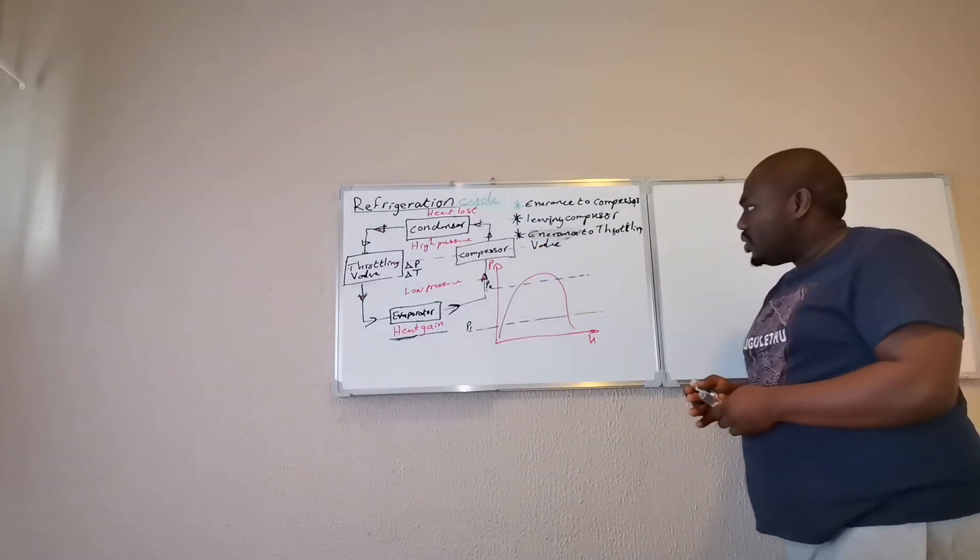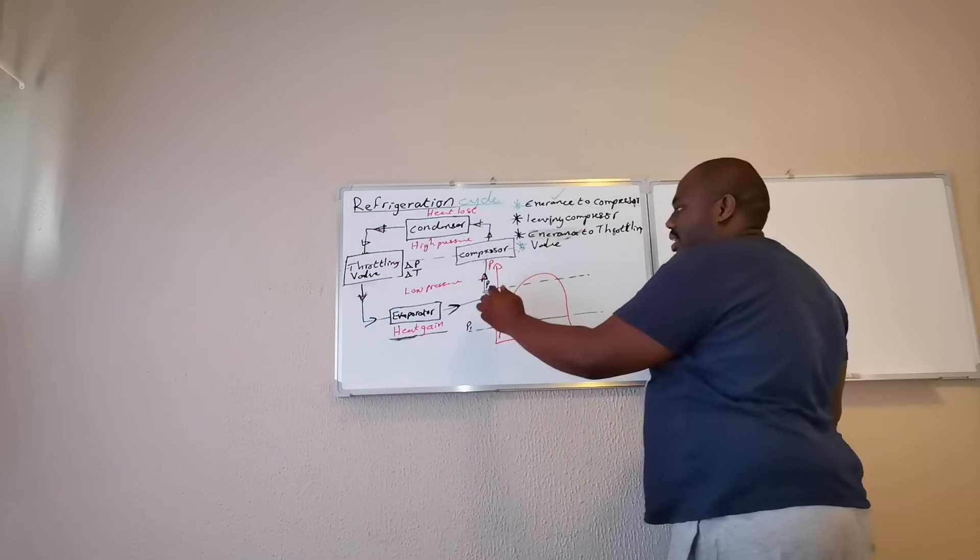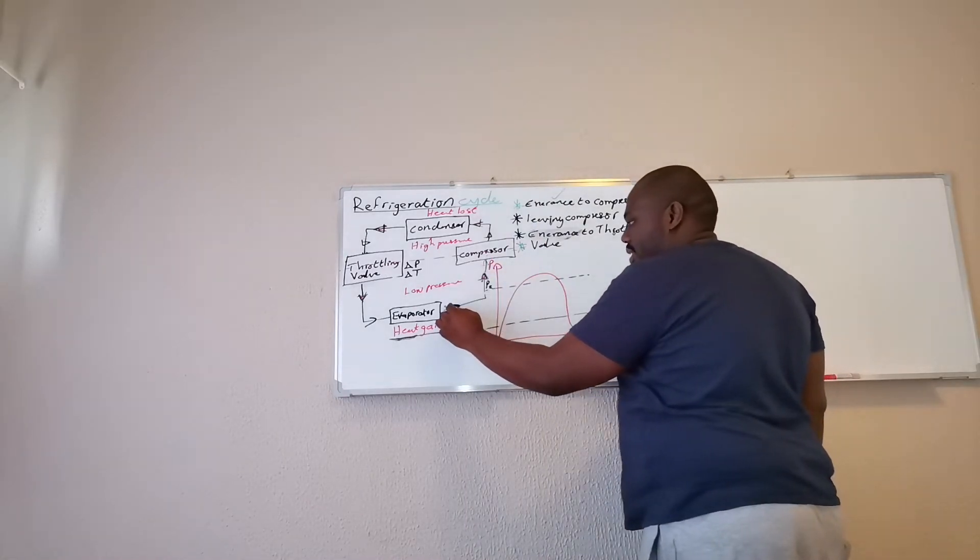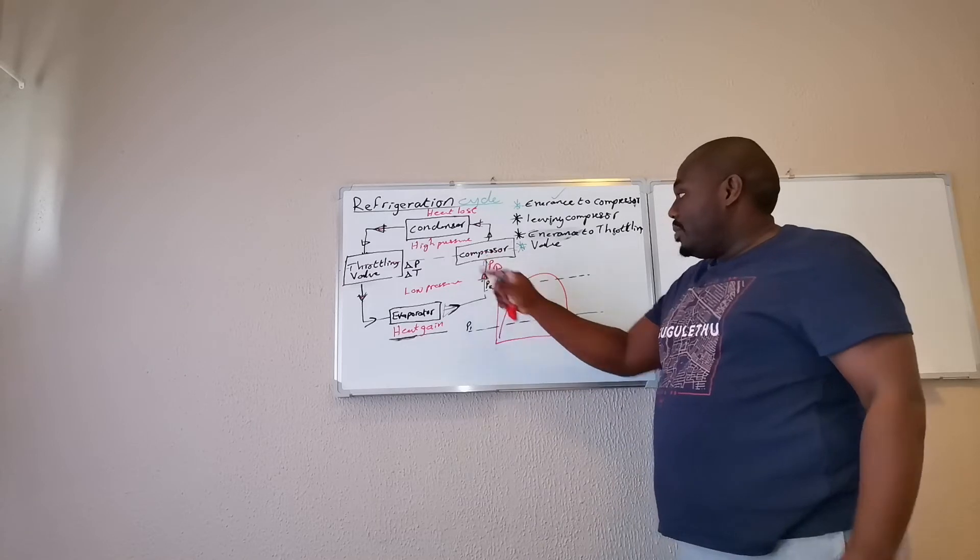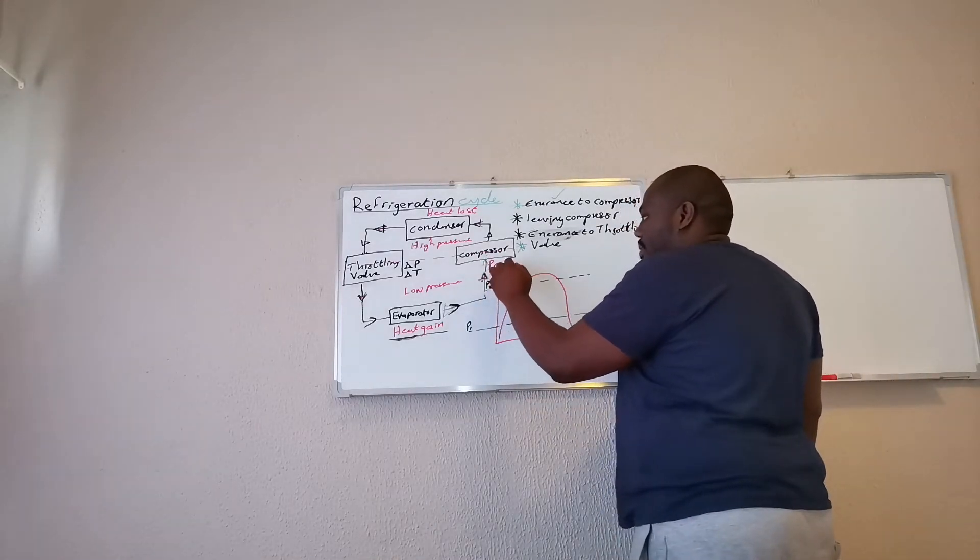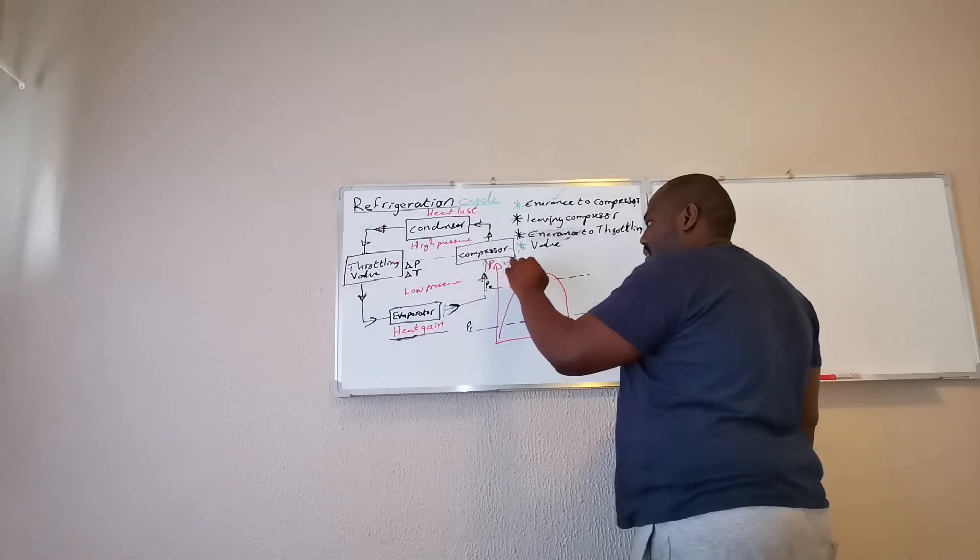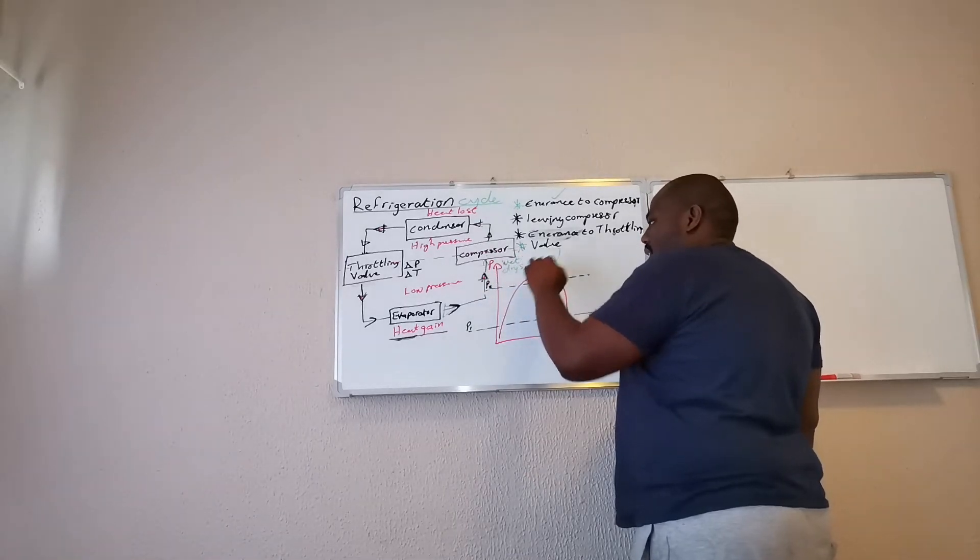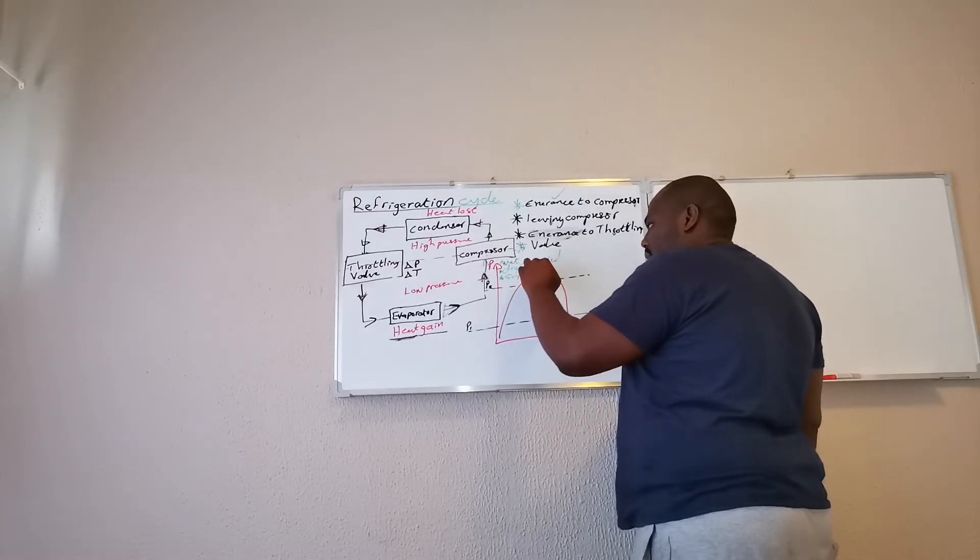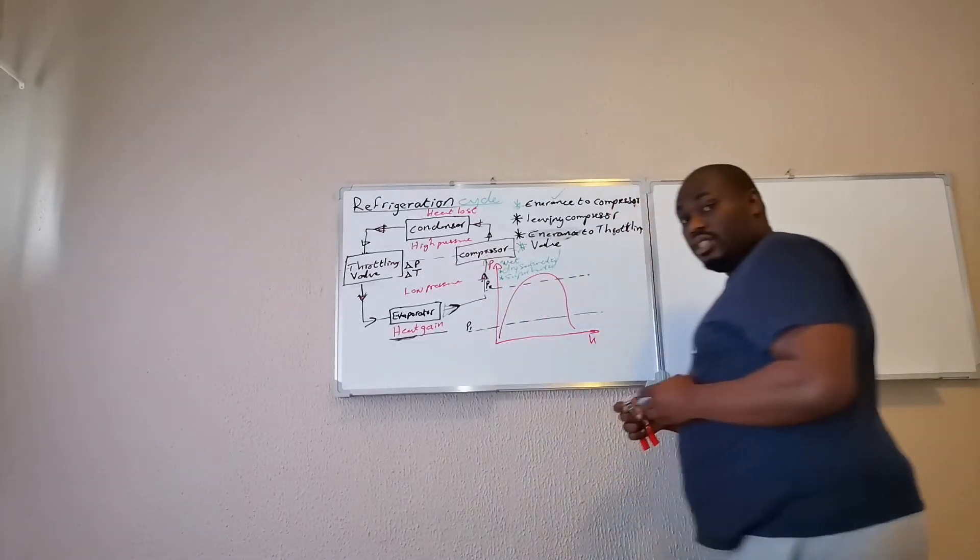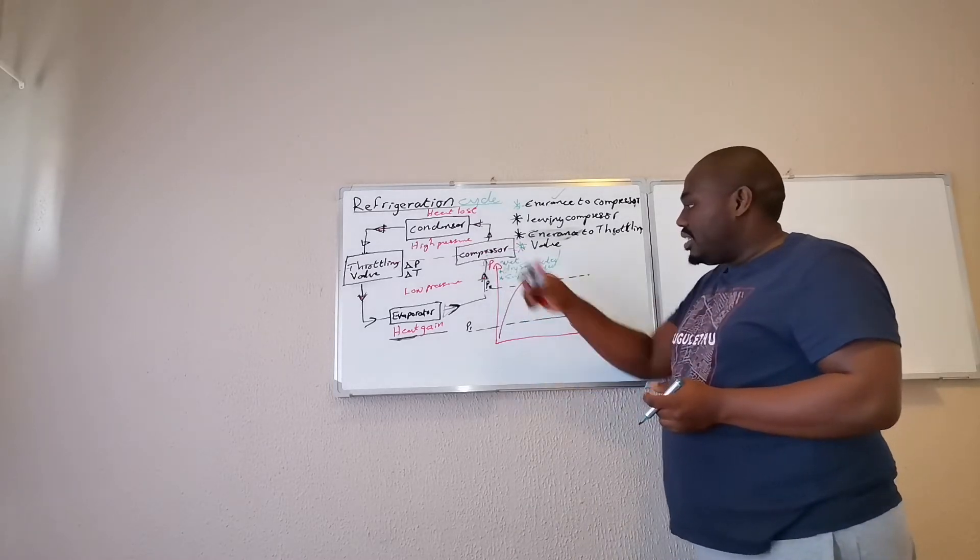So starting with the first one, entrance to the compressor. So this is going in there. So if it's going in there, it means it was exiting my evaporator. So there are three ways in which my refrigerant can enter my compressor. It can either enter your compressor wet, it can either enter your compressor dry saturated, or can either be superheated. So those are the three types that your refrigerant can enter your compressor.